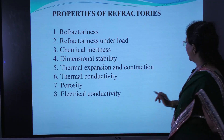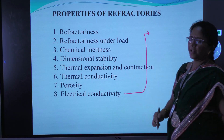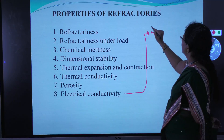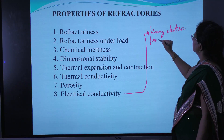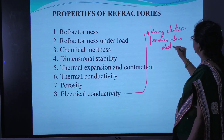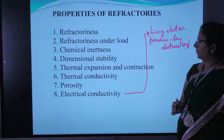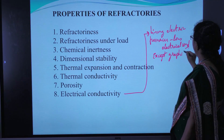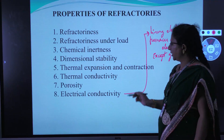The next property is electrical conductivity. Refractories used for lining electric furnaces should have low electrical conductivity. In general, refractories are poor conductors of electricity, except graphite, which is a good conductor. In general, the electrical conductivity of refractories can be increased with an increase in temperature.